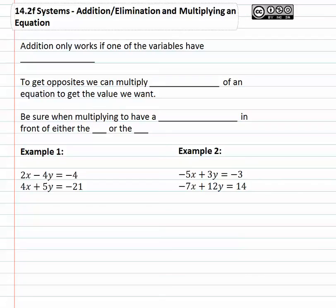The addition only works if the variables have opposites. In other words, in front of x is five and the other x is negative five, or maybe in front of the y's is seven and negative seven. They have to be opposites and so sometimes we have to get the opposites and we can do that by multiplying both sides of an equation together to get the value we want.